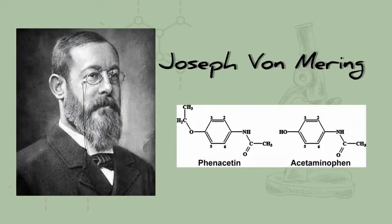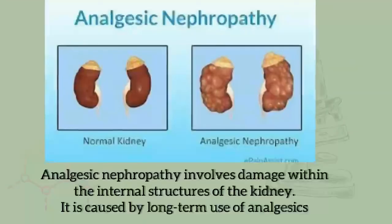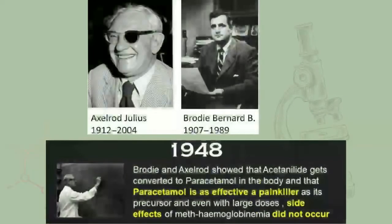A German pharmacologist by the name Joseph von Mering performed the first clinical trials with the two derivatives. Joseph von Mering, however, made a wrong conclusion that phenacetin was much safer to use as compared to paracetamol.